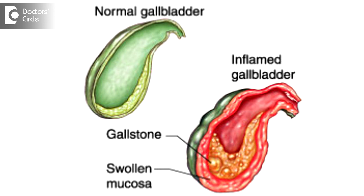Acalculous cholecystitis is more often associated with high fever and viral infections in the body, whereas calculus cholecystitis is the common entity which happens when there are stones in the gallbladder.